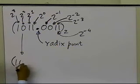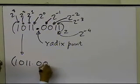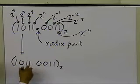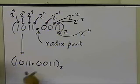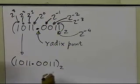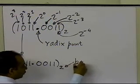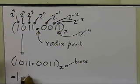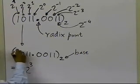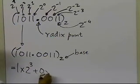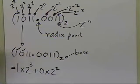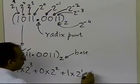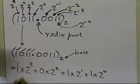Let me rewrite the number: 1, 0, 1, 1 radix point 0, 0, 1, 1 base 2. The subscript 2 indicates the base being used. Now expanding the integer part: 1 times 2 to the power 3, plus 0 times 2 to the power 2, plus 1 times 2 to the power 1, plus 1 times 2 to the power 0 — that last one is the digit just before the radix point.